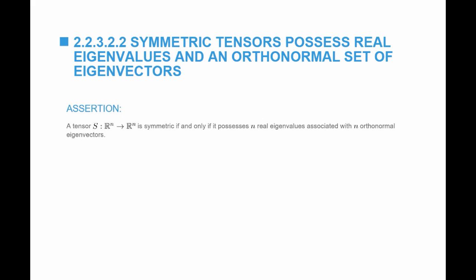A very important fact relied upon in this course, and in the majority of engineering applications, is that whenever symmetric matrices appear, they use the following fact: a tensor S is symmetric if and only if it has n real eigenvalues and n orthonormal eigenvectors. This means whenever I have a symmetric matrix, I only and always have real eigenvalues, and its eigenvectors are always perpendicular to each other. This is not true for any other matrix — only for symmetric matrices. The proof is available on the website; it is a long proof, so work through it if you are mathematically inclined.